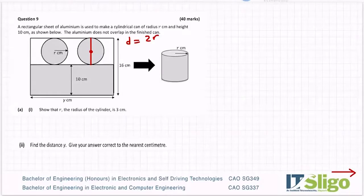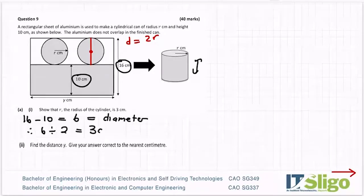So if this is 16, let's subtract off the 10 that is the height of the cylinder and I get 6. So that's equal now to the diameter. Therefore, 6 divided by 2 is equal to 3 centimeters, which is the radius. So you had to go the whole way.